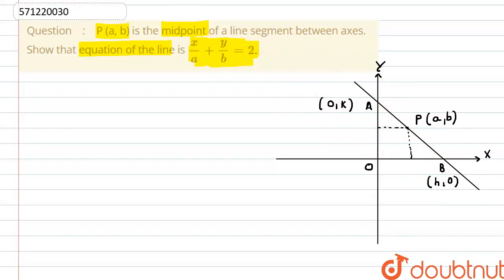So here we can say that P is the midpoint of AB. So here we can use the midpoint formula and the midpoint formula says that x is equal to x1 plus x2 by 2 and y is equal to y1 plus y2 by 2. So this is the midpoint formula.